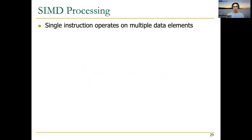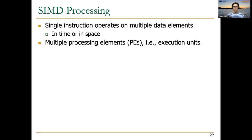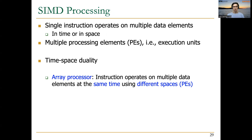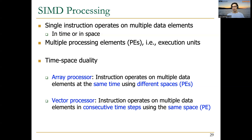As I said, these are SIMD units. SIMD is a compute paradigm that consists of a single instruction operating on multiple data elements, and this can be done in time or in space. Basically, we have an array of multiple execution units or multiple processing elements. This distinguishes between two types of SIMD processors: array processors, where an instruction operates on multiple data elements at the same time using different spaces, and vector processors, where an instruction operates on multiple data elements in consecutive time steps using the same space.